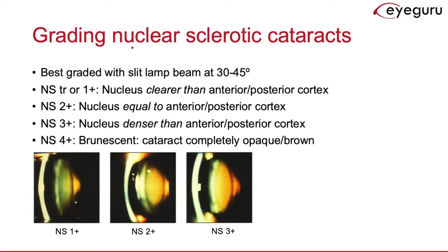Nuclear sclerotic cataracts will worsen with age, so we need a way to monitor their progression over time. We grade the cataract with trace or 1-plus as least severe and 4-plus as most severe. These cataracts are typically best graded with the slit lamp light beam directed at about a 30 to 45 degree angle.